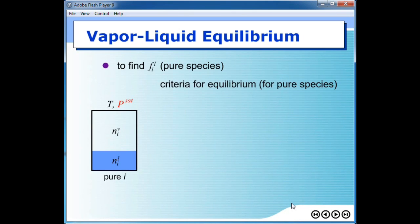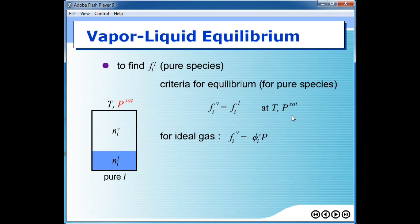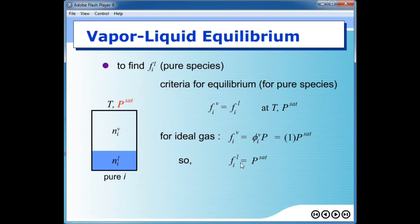Now consider this system. The criterion for equilibrium is that the fugacity of the two phases would be the same. The only difference is that the fugacity has no cap — this is fugacity of pure species. The temperature and pressure here becomes the vapor pressure. We can still assume that the vapor side pressure is not so high, so it can be assumed as ideal gas. If it is ideal gas, the fugacity coefficient in vapor can be assumed to be 1, and pressure becomes vapor pressure. So fugacity in vapor phase equals vapor pressure. Plugging this into the equation, the fugacity in liquid phase equals the vapor pressure of species i.